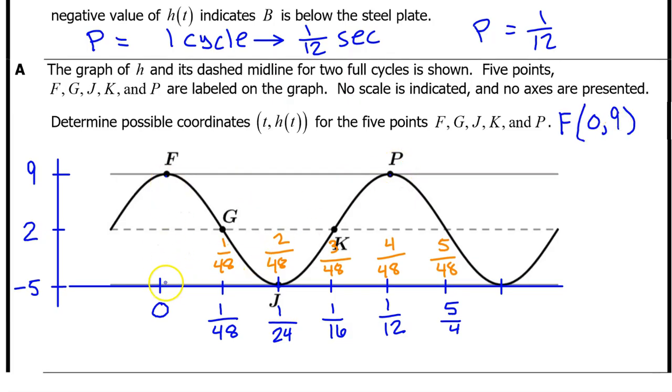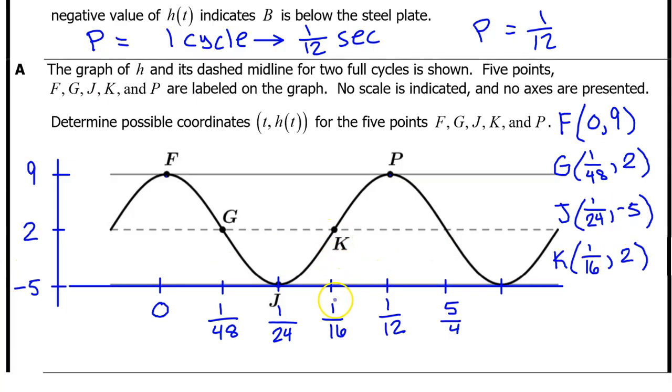Point F is at 0 comma 9. Point G is at 1 over 48 comma 2. Point J is at 1 over 24 comma negative 5. Point K is at 1 over 16 comma 2. Point P is at 1 over 12 comma 9.